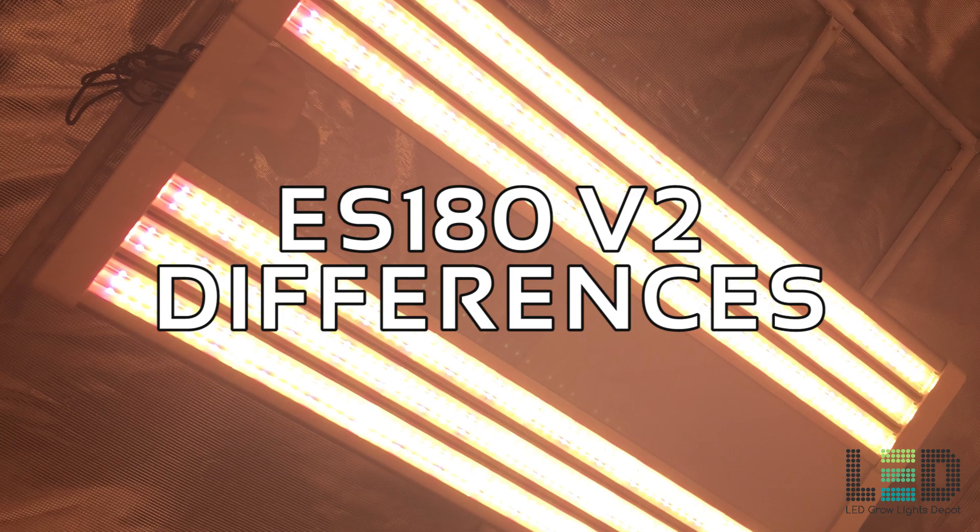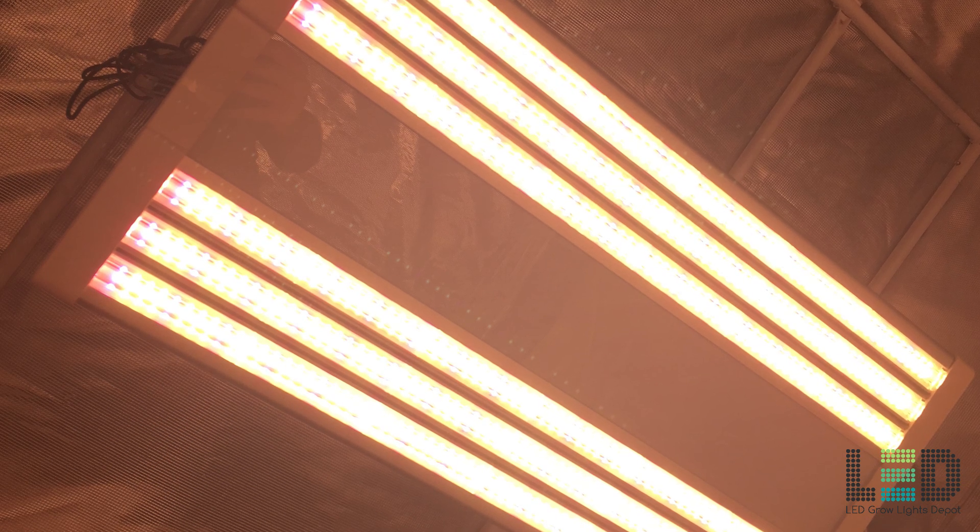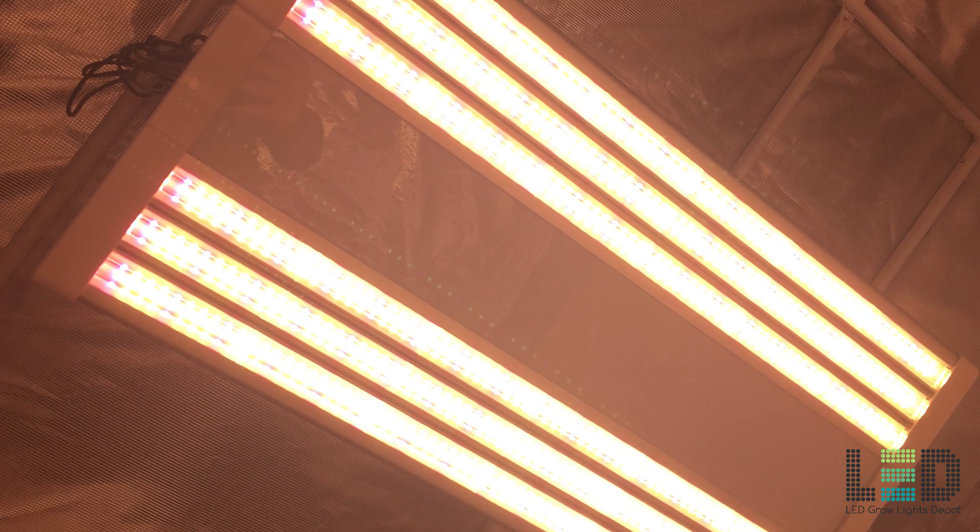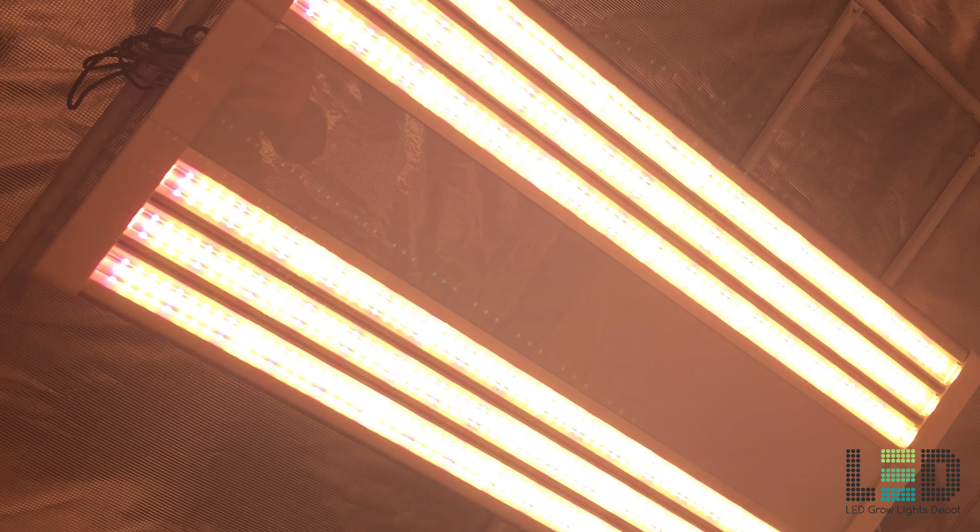What are the differences between the ES180 V1 and the new V2? Let me first note that the body is identical to the V1, so there are not any changes in the main look and feel of the fixture when the light is turned off. Even the lenses are the same.